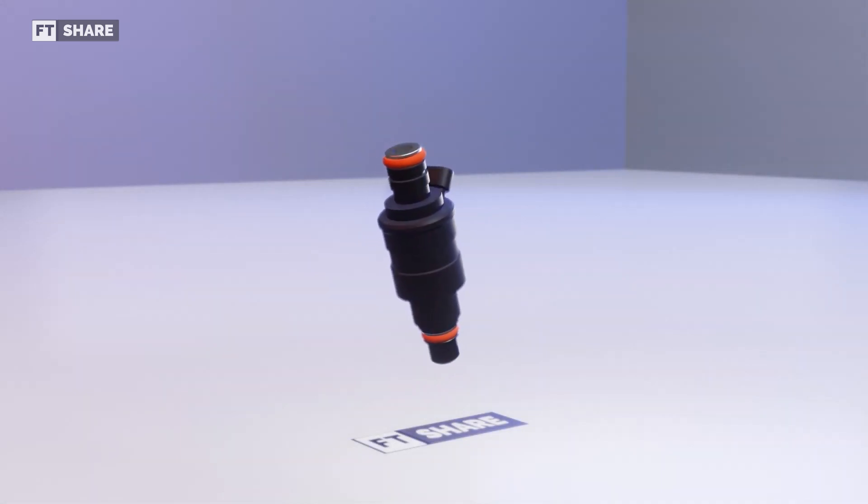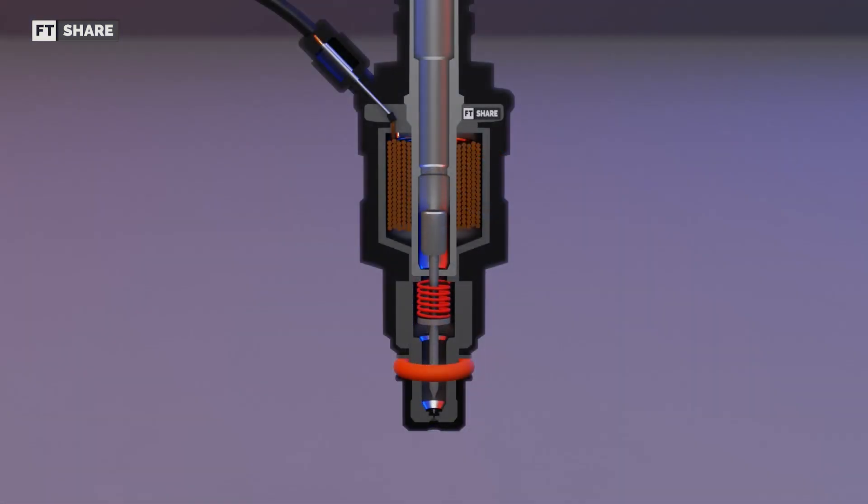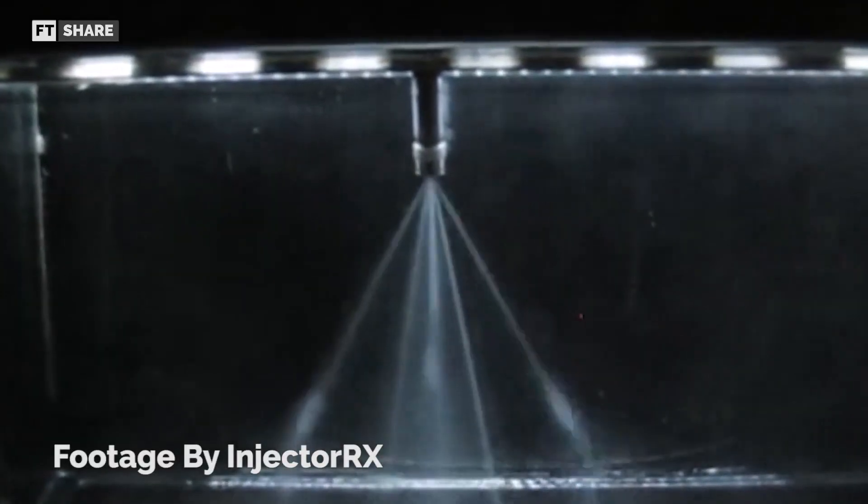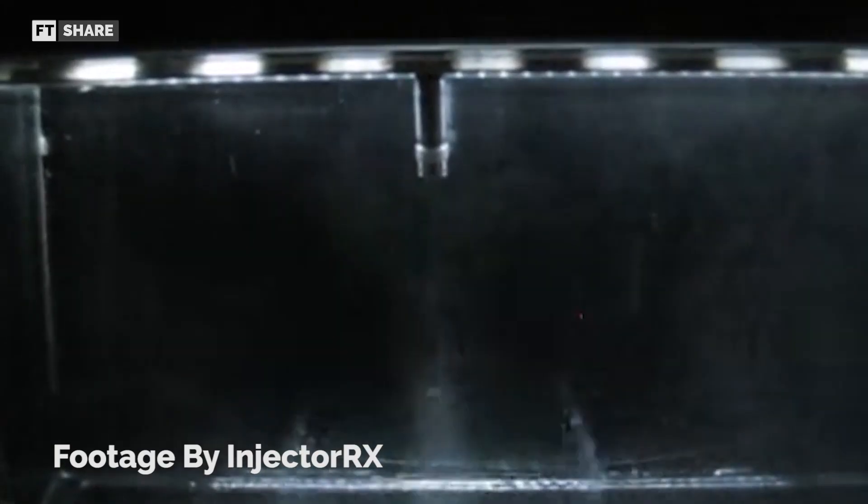For the working principle, this injector aims to atomize the fuel by using high pressure from the fuel pump. This high-pressure fuel will be blown through a very small nozzle before mixing with air. This allows the fuel to mix more completely with the air, producing a more powerful burst and cleaner exhaust.